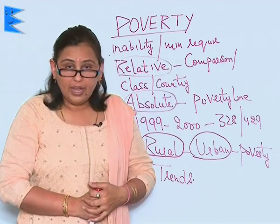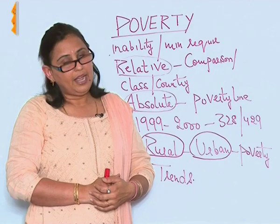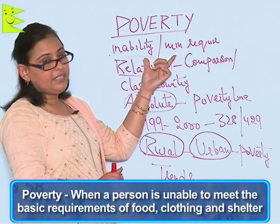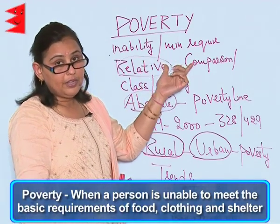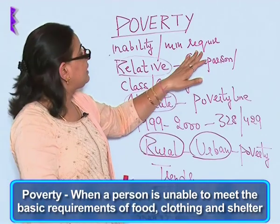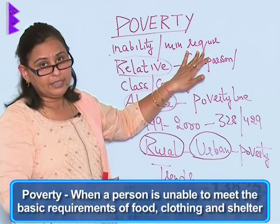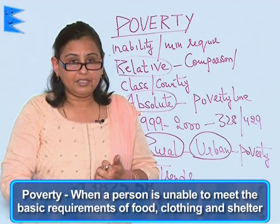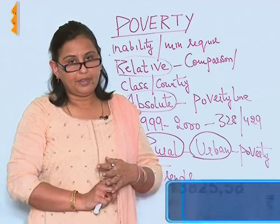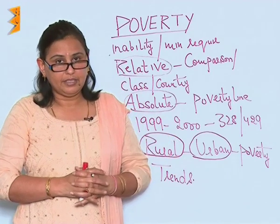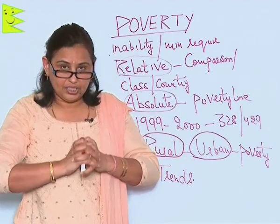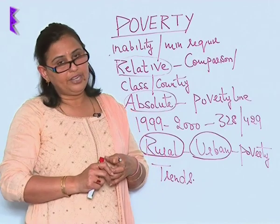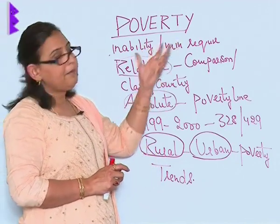Now you are going to ask me: what is poverty and who are the people who are poor? When a person is unable to meet the basic or minimum requirements like food, clothing, and shelter, it is said that he lives in poverty. So a poor person is one who does not have proper food, clothing, or shelter. That's being in poverty.